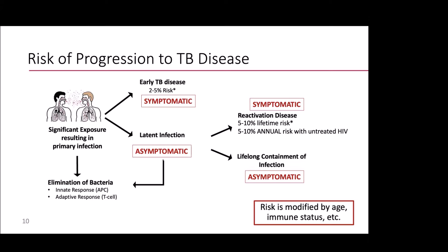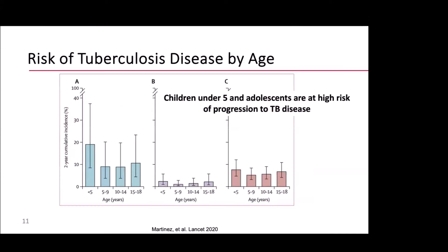Some people — actually the majority — would contain the infection lifelong. This is how things look in adults. But this risk is really modified not only by immune status, as we see with HIV, but also by age. There are data that Leo Martinez published in The Lancet a couple of years ago that clearly show how children are at a higher risk of progression to TB disease.